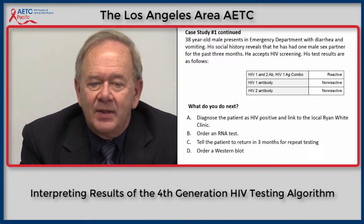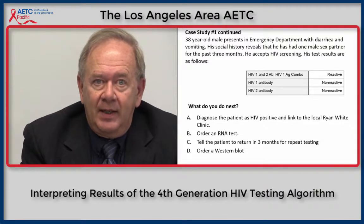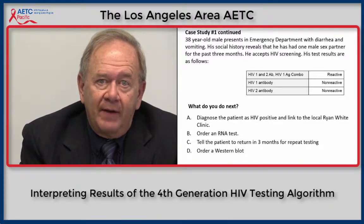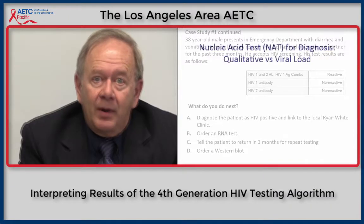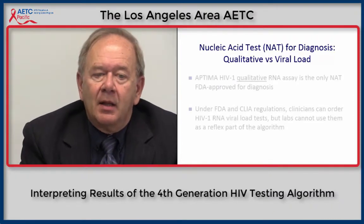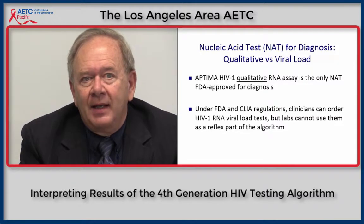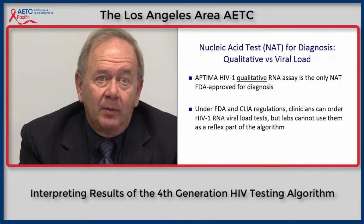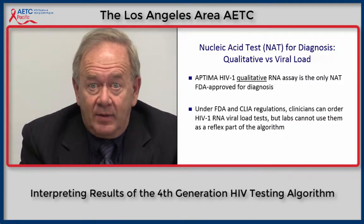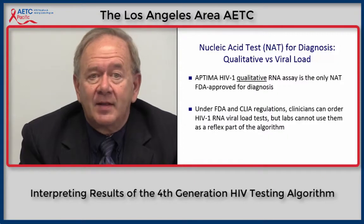Having a patient return in three months for repeat testing would have formerly been the recommendation with an indeterminate Western blot, but we can detect acute infection much sooner by doing an RNA test. The APTIMA HIV-1 qualitative RNA assay is the only nucleic acid test FDA-approved for HIV diagnosis. However, many clinicians would want an HIV viral load test, which is more widely available in hospitals. Under FDA and CLIA regulations, the clinician can order the HIV-1 viral load test to resolve results where you have a positive fourth-generation assay and a negative antibody test, but laboratories cannot use a viral load automatically as a reflex part of the algorithm.